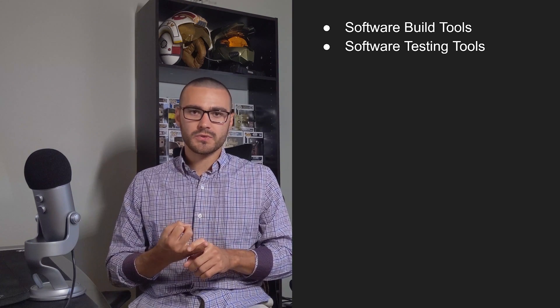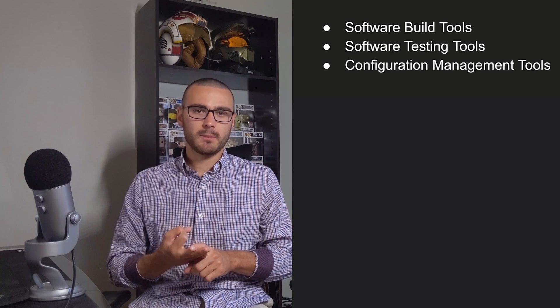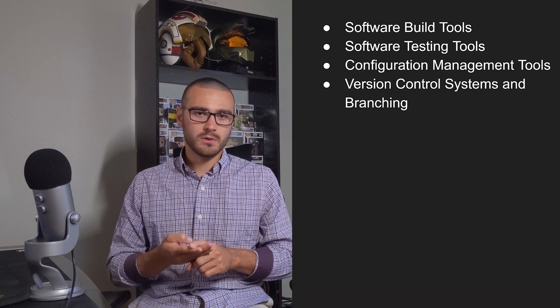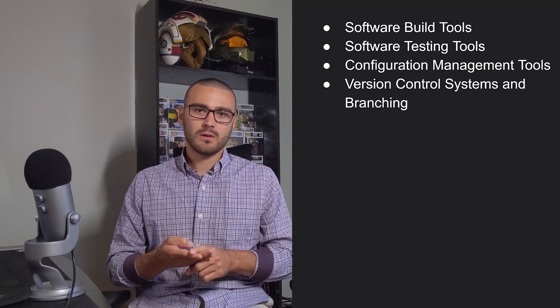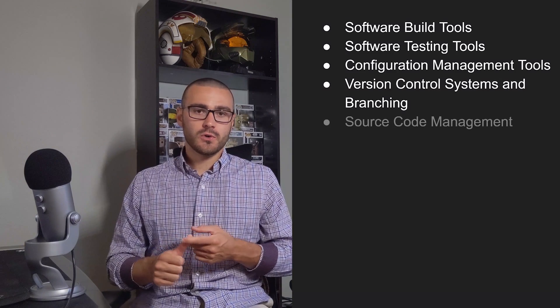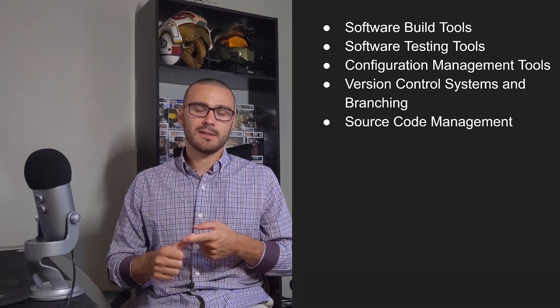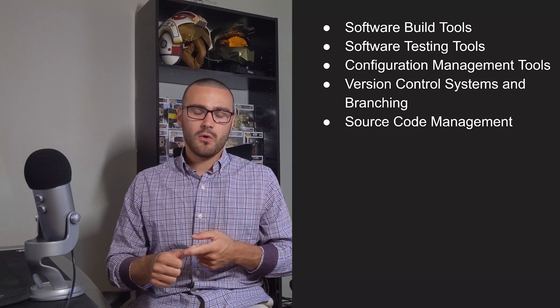Software build tools like Make and Gradle. Software testing tools like JUnit. Configuration management tools like Puppet and Chef. Version control and branching, so you need familiarity with a version control system like Git or SVN. Source code management, so you need to understand how to manage source code, and that will mean that you need to be familiar with a tool like Bitbucket or GitHub.